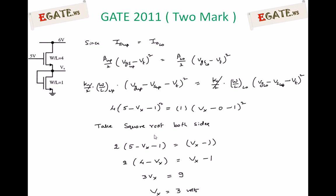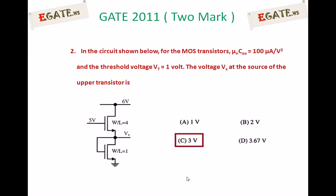Taking the square root of both sides: 2·(5 − Vx − 1) = (Vx − 1), which simplifies to 2·(4 − Vx) = Vx − 1. After simplification, Vx equals 3 volts. So the required output voltage is 3 volts, and the correct answer is option C.